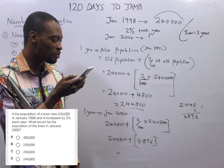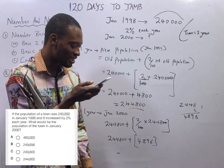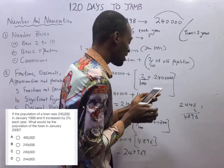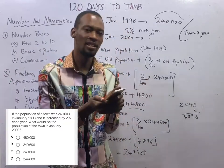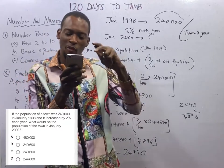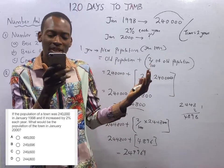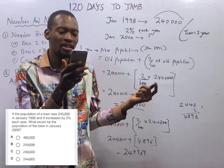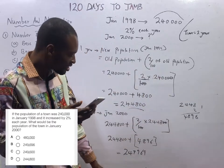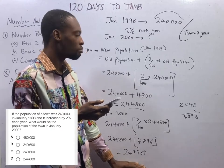So 244,800 plus 4,896 gives 249,696. As seen in option B, 249,969. Therefore, if the population of a town was 240,000 in January 1998 and it increased by 2% each year, the population of the town in January 2000 is 249,969, which is option B.